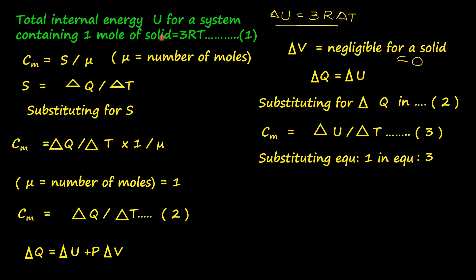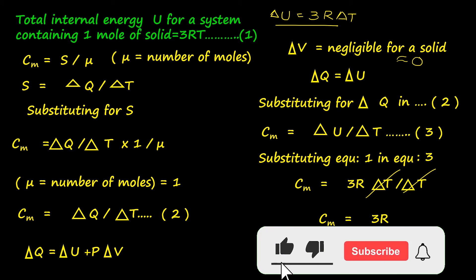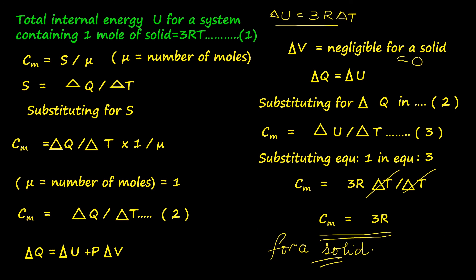Substituting delta U for delta Q in equation 2, molar specific heat capacity equals delta U divided by delta T — equation 3. Substituting equation 1 (delta U equals 3R·delta T) into equation 3, we get molar specific heat capacity equals 3R·delta T divided by delta T. The delta T terms cancel, giving us the result: molar specific heat capacity for a solid equals 3R. This means the molar specific heat capacity for any solid is the same constant, independent of temperature. Experiments confirmed similar values, with carbon being an exception.